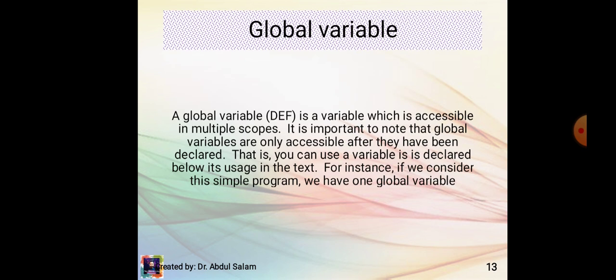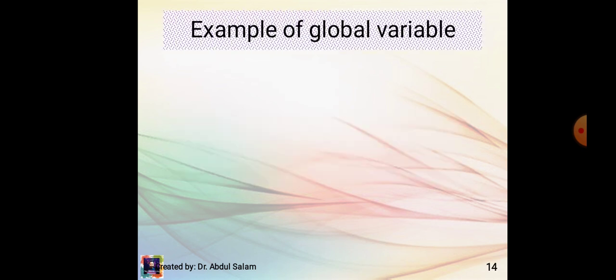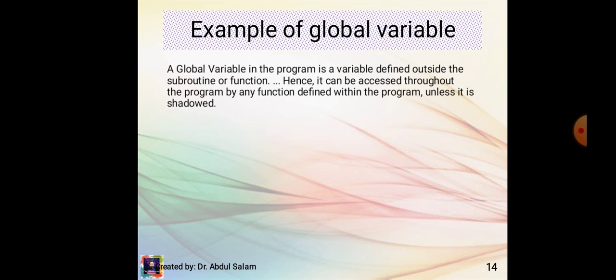Global variables: a global variable is a variable which is accessible in multiple scopes. It is important to note that global variables are only accessible after they have been declared. A global variable in the program is a variable defined outside the subroutine or function, and hence it can be accessed throughout the program by any function defined within the program, unless it is shadowed.